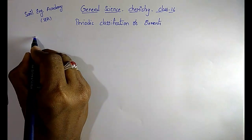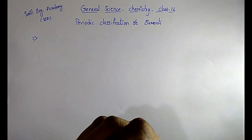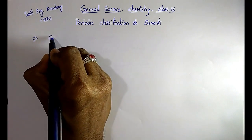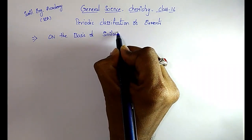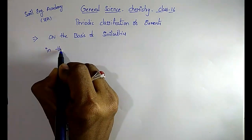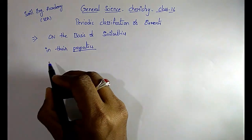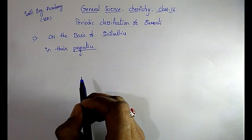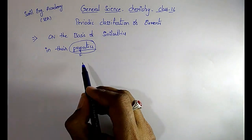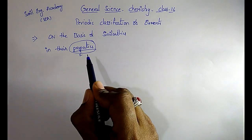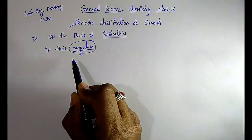Here we know that there are several elements available in our Earth. How are they classified? They are classified on the basis of similarities in their properties. That means they are classified based on their properties. So all the scientists tried to group the elements which have similar properties. The arrangement of elements in such a way that groups all elements with similar properties is called periodic classification or periodic arrangement.